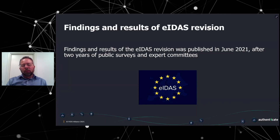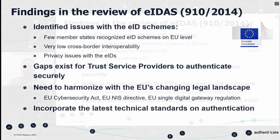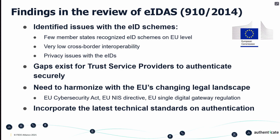Moving on. The findings and results of the eIDAS revision were published in June 2021 after two years of public service and expert committees, in which the FIDO Alliance participated. The findings include: there were issues with EID schemes — only 19 member states have recognized EID schemes at EU level, which is lower than hoped. Cross-border interoperability is very low — only about 50,000 transactions per year in the entire European Union. There are also privacy issues with EIDs, meaning that if you have an X.509 certificate, the entire certificate is exposed when you authenticate to a service.